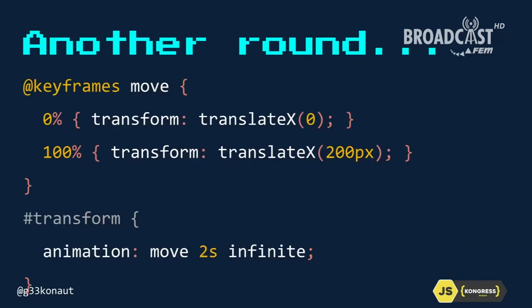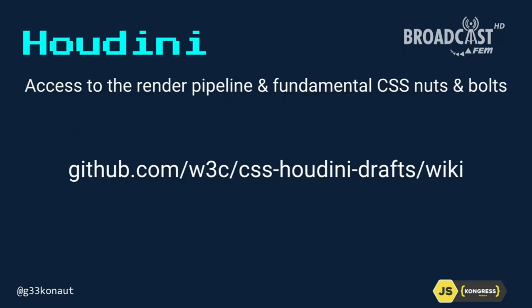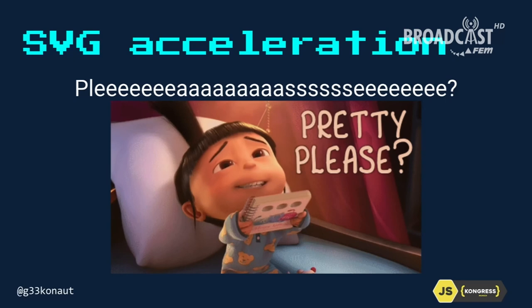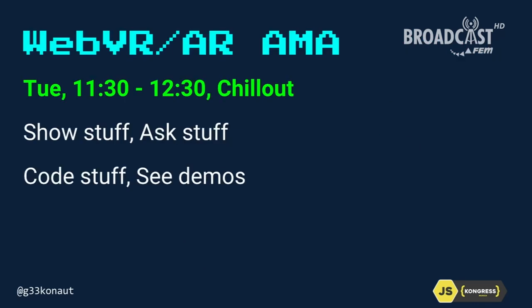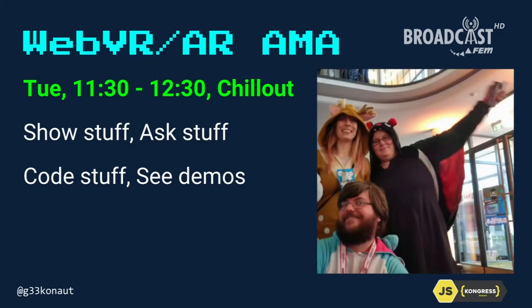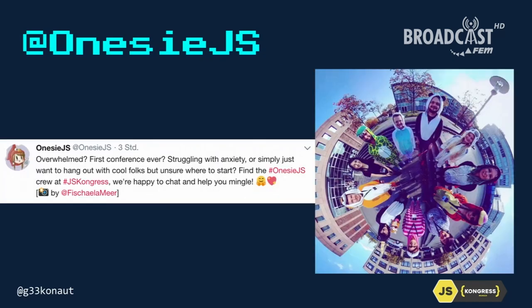There are cool upcoming things like the CSS element function, Houdini — which lets you hook into the painting pipeline — intersection observers and performance observers that give you callbacks when things happen in the browser. Please accelerate SVG and use GPU for all the things — Servo is already trying to do this. Tomorrow we have a wonderful VR/AR/WebVR office hours session — come ask us things and show us things. There's also a Global CFP day if you're in an underrepresented group and want to speak.